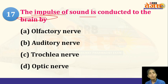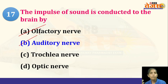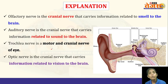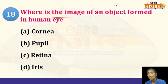Next: the impulse of sound is conducted to the brain by which nerve — olfactory, auditory, trochlear, or optic? The answer is the auditory nerve. The trochlear nerve helps in the movement of the eyeballs, allowing us to look in different directions.